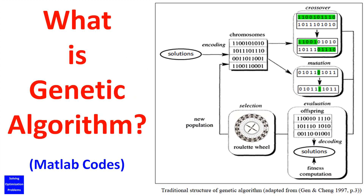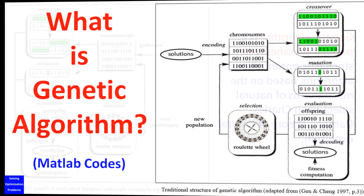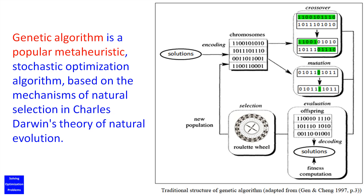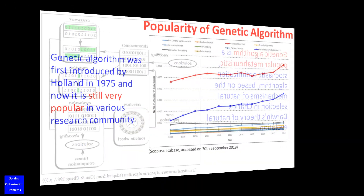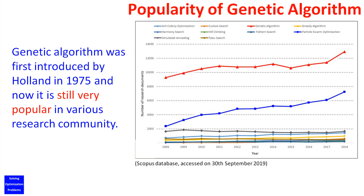The question to be answered here is: what is genetic algorithm? Genetic algorithm is a popular meta-heuristic, stochastic optimization algorithm based on the mechanisms of natural selection in Charles Darwin's theory of natural evolution. Genetic algorithm was first introduced by Holland in 1975, and now it is still very popular in various research communities.